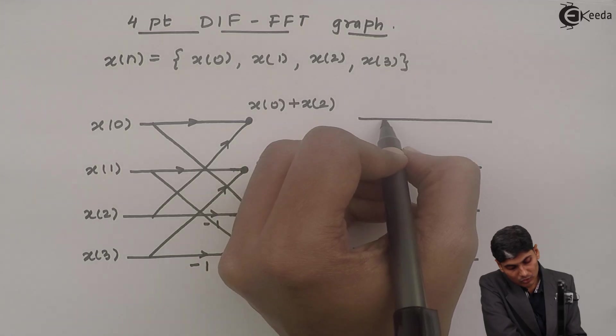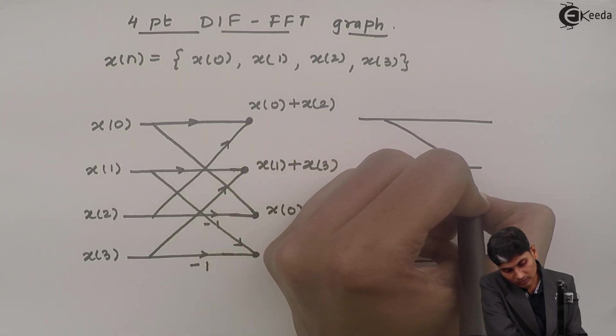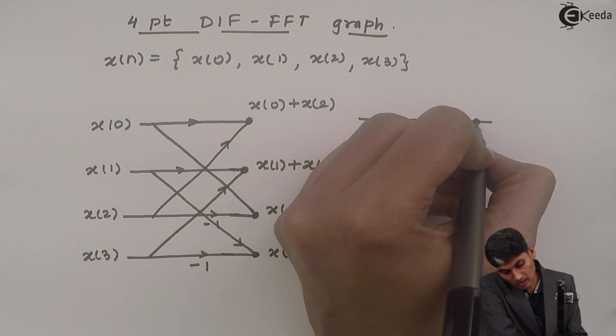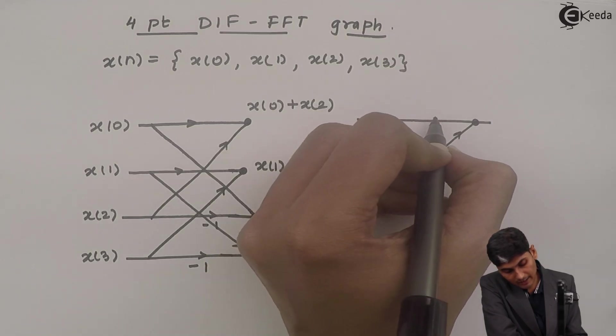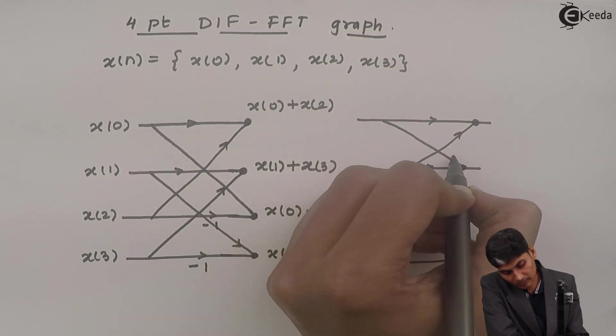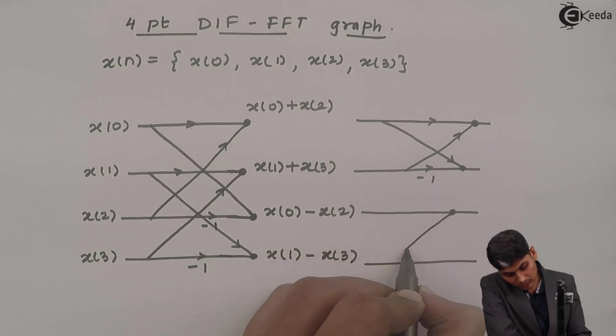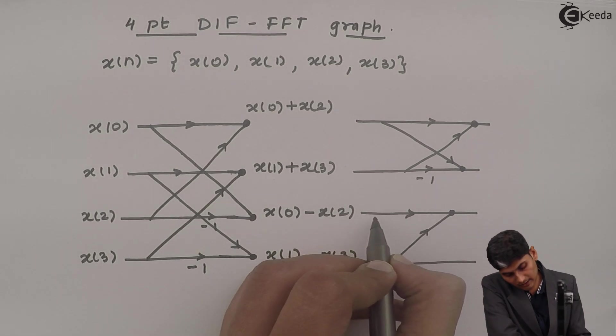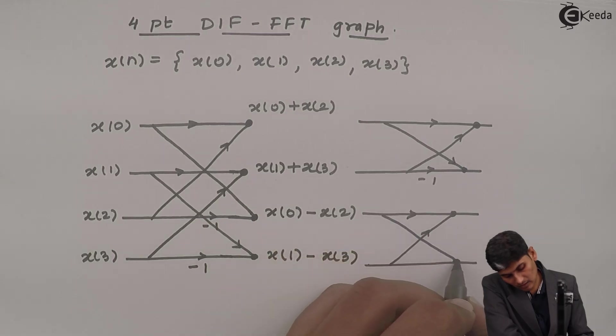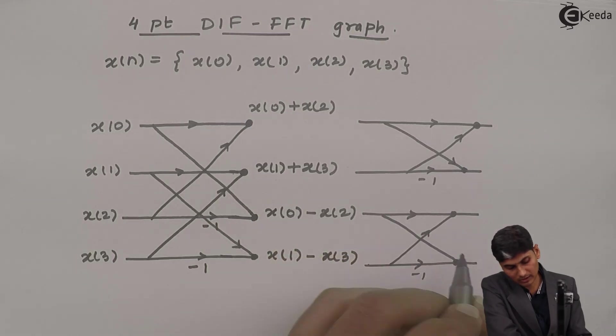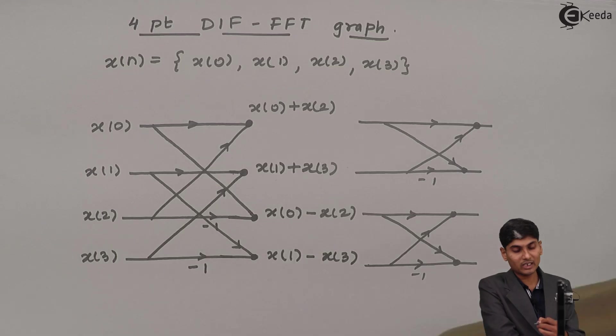And these two values are now added and subtracted. And these two values are going to get added and subtracted. So whenever I am going up, I am going to add. Whenever I am coming down, I am going to subtract.